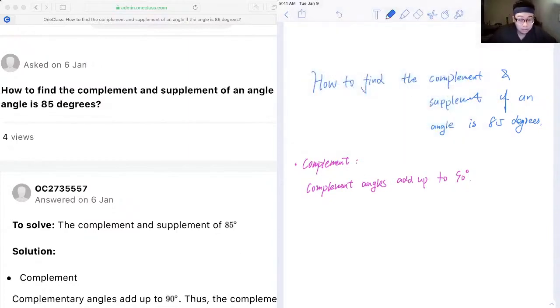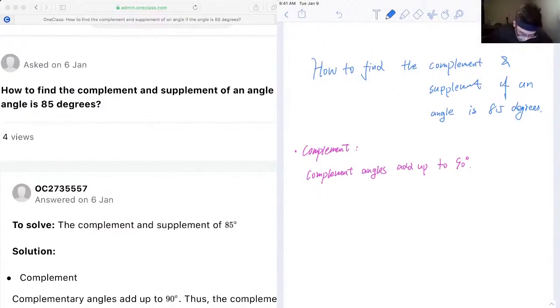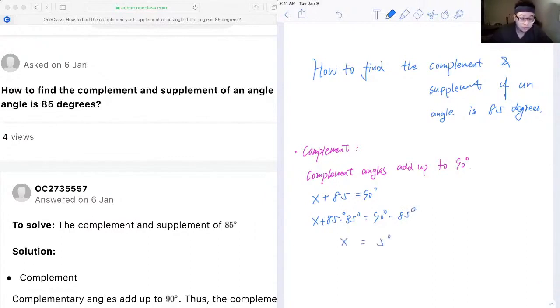And in our case, the complement of 85 degrees can be computed as x plus 85 equals 90. And we minus 85 on both sides, which will give us x equals 5 as the complement angle.